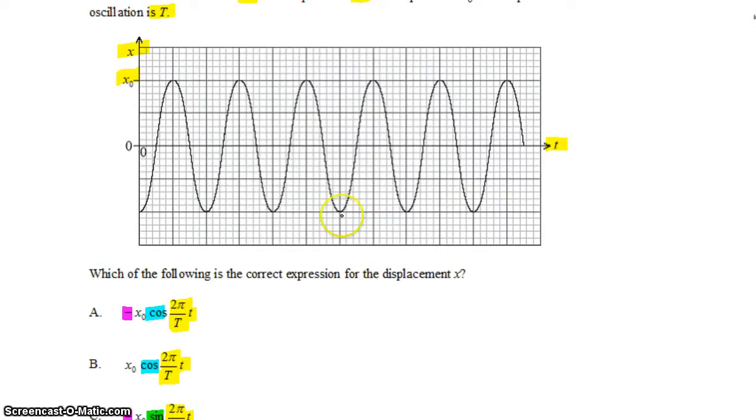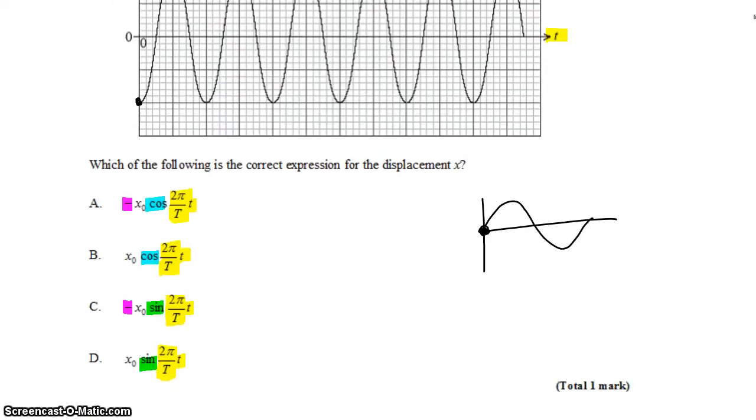Sine graphs start at the origin. This one doesn't. This one starts at an extreme, and that's what cosine graphs do. So right off the bat I can eliminate C and D.